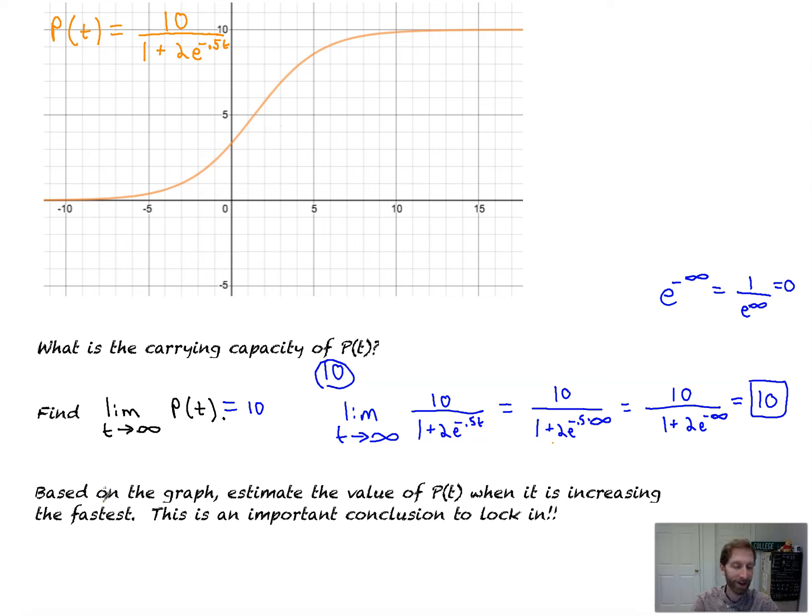Based on the graph, estimate the value of P(t) when it is increasing the fastest. So we're not saying just when is it increasing. It's increasing everywhere. When is the tangent line the steepest? It's an important conclusion. We're going to look at that in later problems, too.